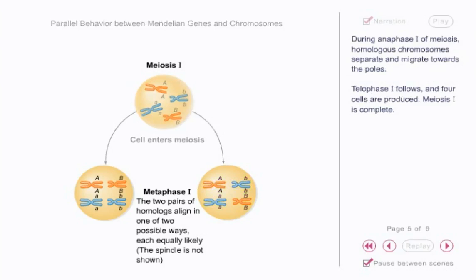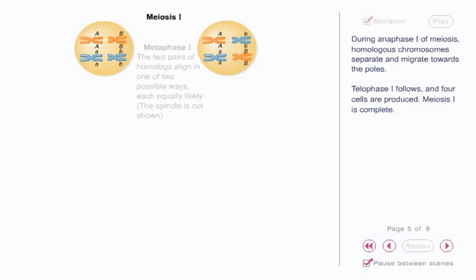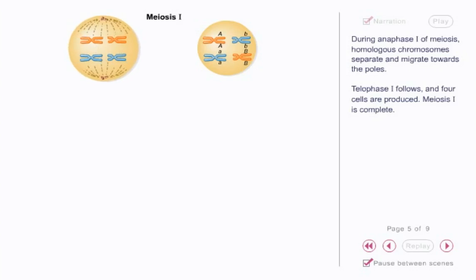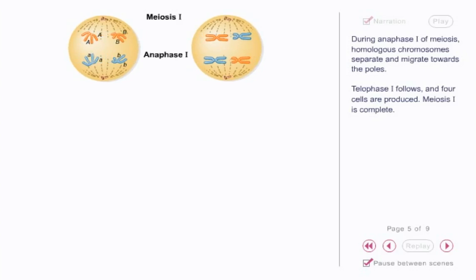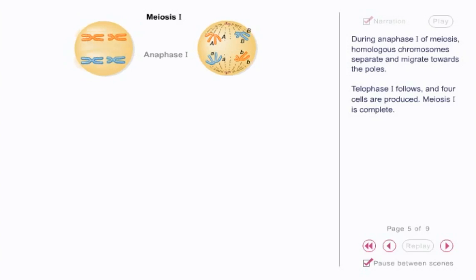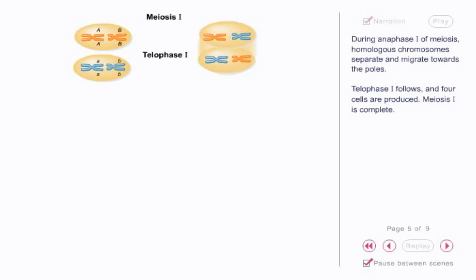During anaphase I of meiosis, homologous chromosomes separate and migrate towards the poles. Telophase I follows and four cells are produced. Meiosis I is complete.